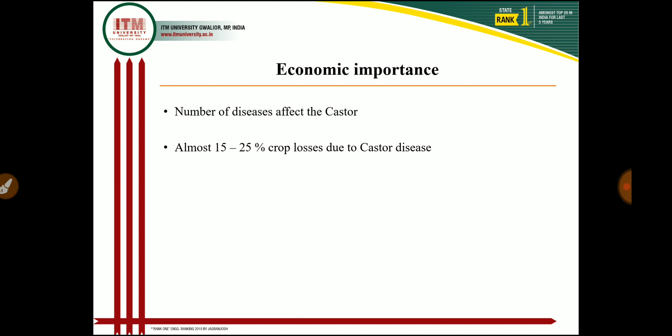Castor is the most important oil seed crop in India and a number of diseases affect the castor crop. These diseases are caused mainly by fungal pathogens, but bacterial, viral, and nematode pathogens are also present. Physiological and environmental factors also cause problems. Almost 15 to 25 percent crop loss occurs due to castor diseases; if we control these diseases we can definitely increase yield and farmers will get more income.